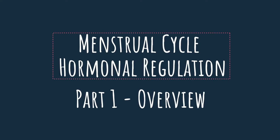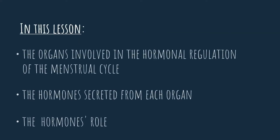In the previous lessons we've learned about the ovarian cycle and saw the stages of follicle maturation. In these next few videos we're going to talk about the hormonal regulation of the ovarian cycle. We will learn about the organs that play a role in the system, which hormones are secreted from each organ, and the role of each hormone.